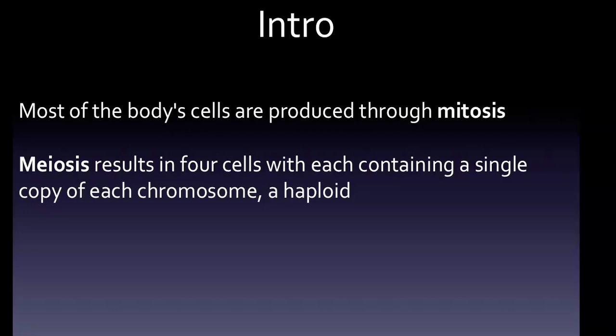Most of the body's cells are produced through mitosis, which is a process of cell replication that results in two identical daughter cells from a single parent. The number of chromosomes remains the same as the parent, which is 46, and this is a diploid cell.